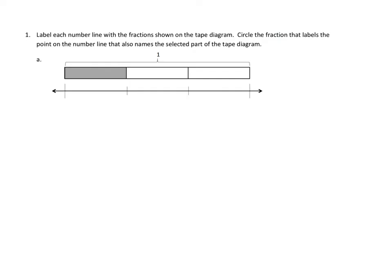Let's take a look at problem number one and we'll read it together. Label each number line with the fraction shown on the tape diagram. Circle the fraction that labels the point on the number line that also names the selected part of the tape diagram. Now this part I think is really confusing but we'll get back to it in a second.